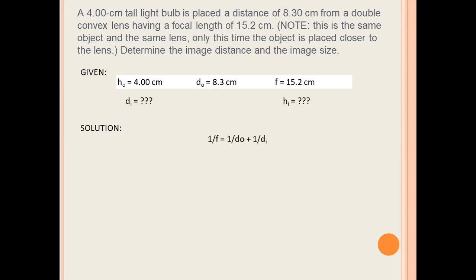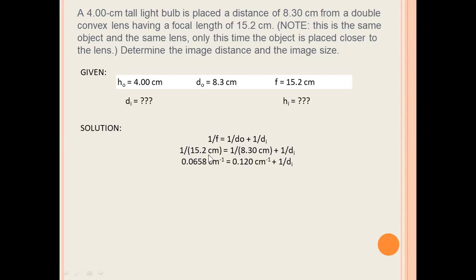Now let's proceed with the solution. We're going to apply the thin lens equation: the reciprocal of focal length is equal to the reciprocal of the object distance plus the reciprocal of the image distance. Substituting the values: 1 over 15.2 cm equals 1 over 8.3 cm plus 1 over the unknown image distance. Simplifying, 0.0658 per cm equals 0.12 per cm plus the reciprocal of the unknown image distance.